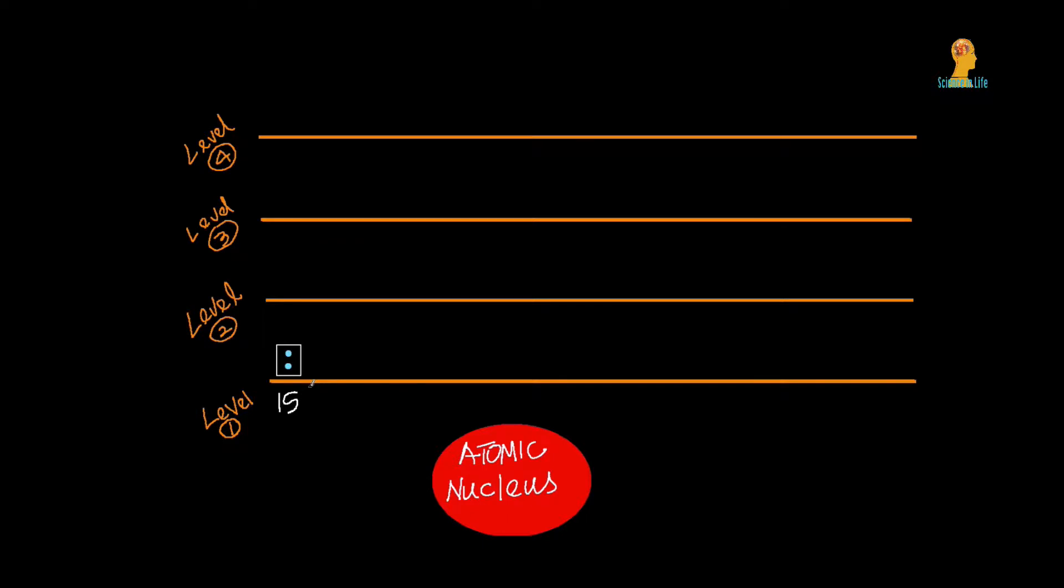The next shell or the second shell has two sublevels, S and P. The P sublevel can have six electrons in three orbitals. So the second shell can have a total number of eight electrons: two in S sublevel and six in P sublevel.